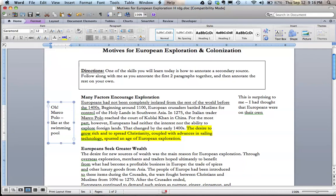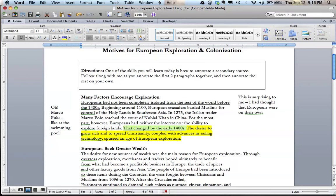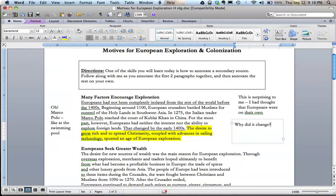For the most part, however, Europeans had neither the interest nor the ability to explore foreign lands. That changed by the early 1400s. So now I'm going to add in a question because what I'm curious about is why did it change? So if I'm reading along for the first time, what was it about it that changed in the early 1400s? Why? And then reading my last sentence again. The desire to grow rich and to spread Christianity, coupled with advances in sailing technology, spurred an age of European exploration. Aha! So this looks like it's my answer to my question here. So I'm just actually going to go ahead and answer it right here. Growing rich, religion, and new technology. So I'm sort of summarizing what the answer is to that question that caused an age of European exploration.